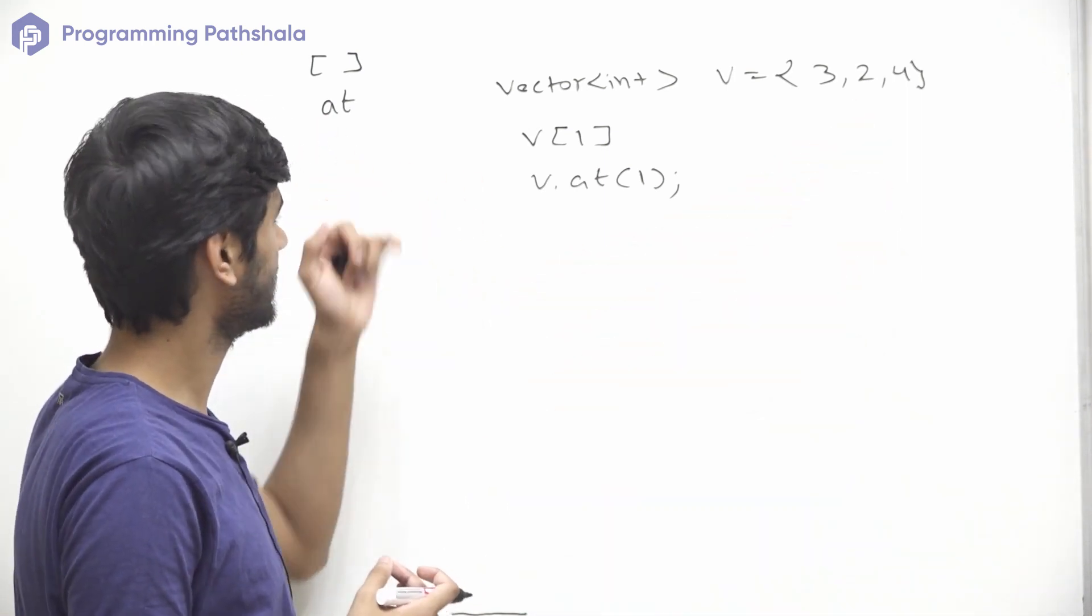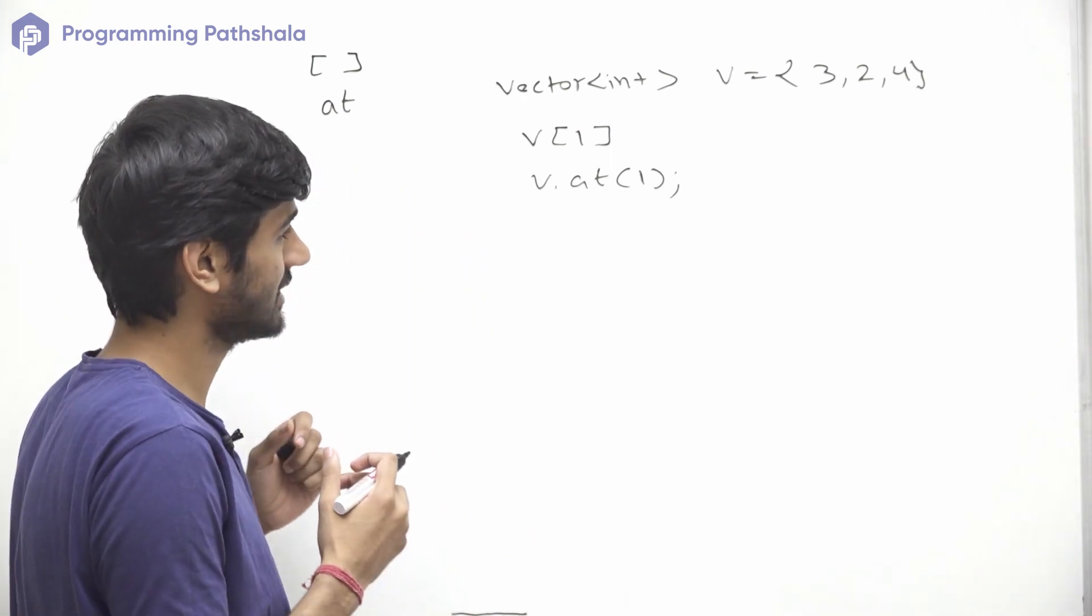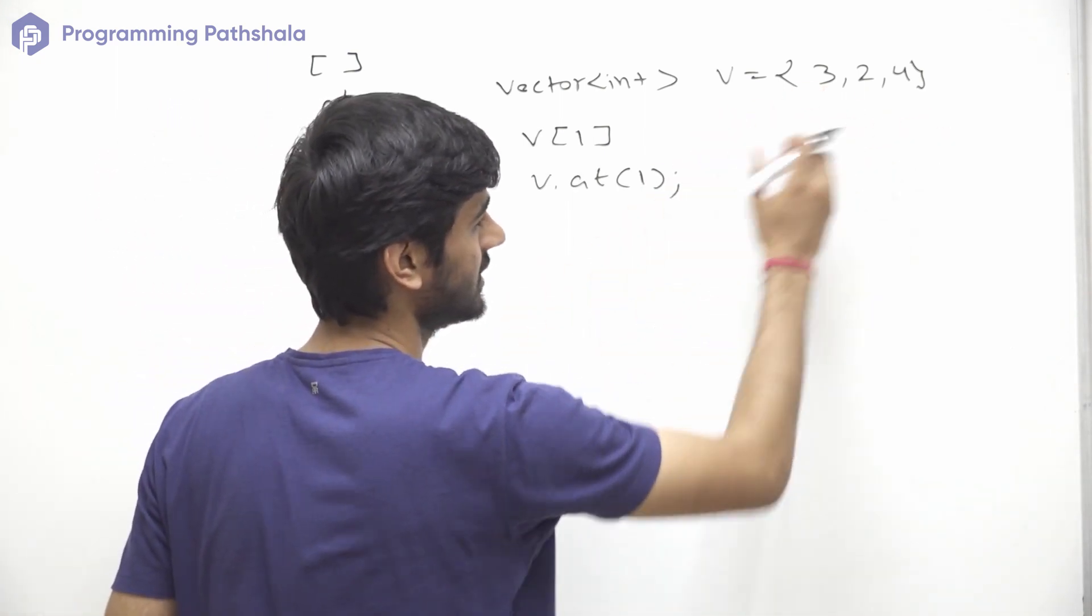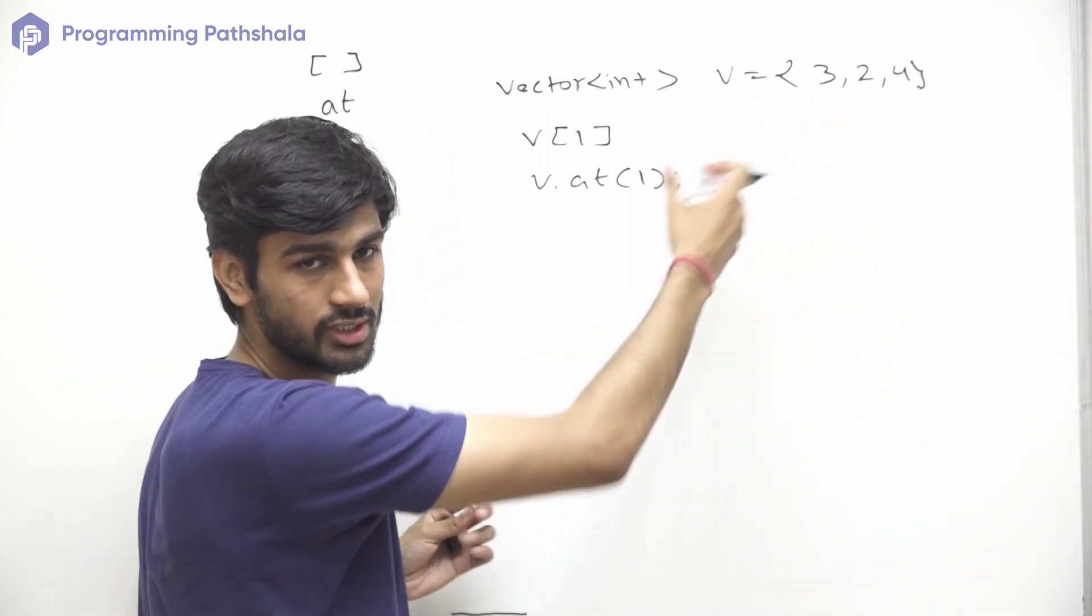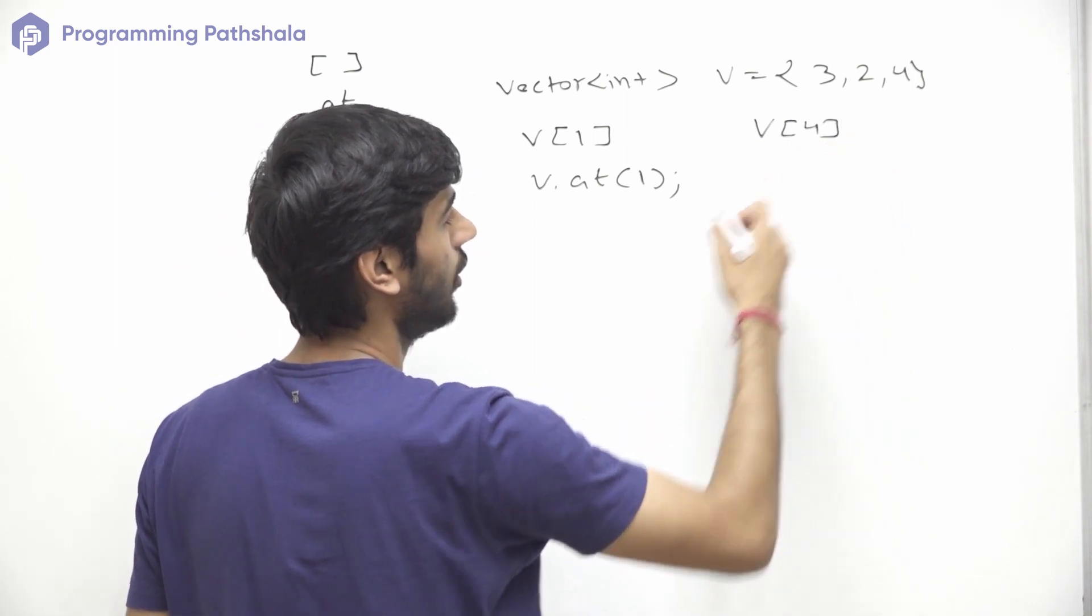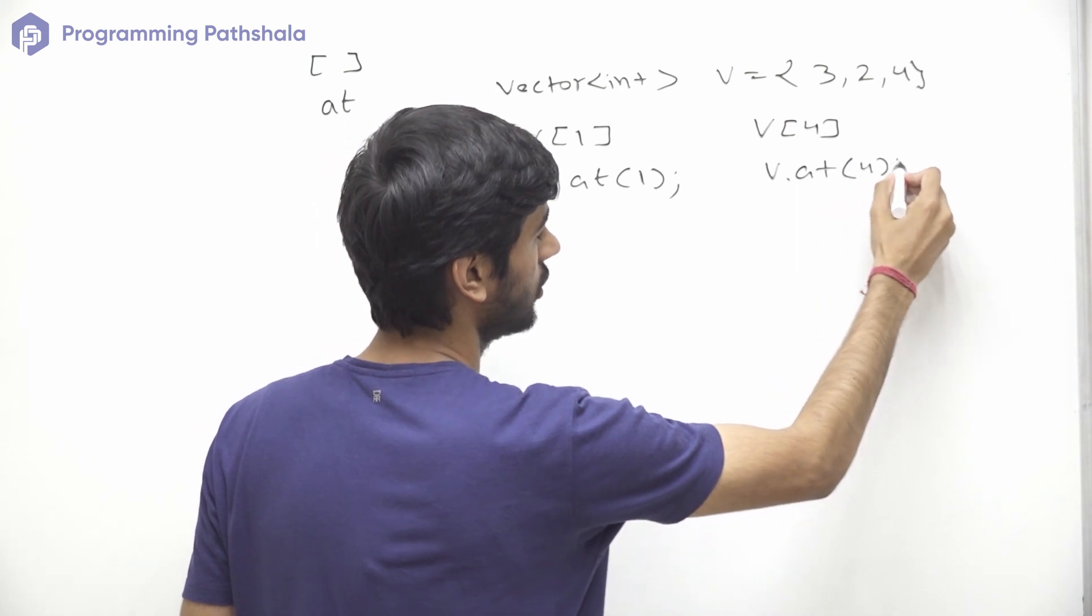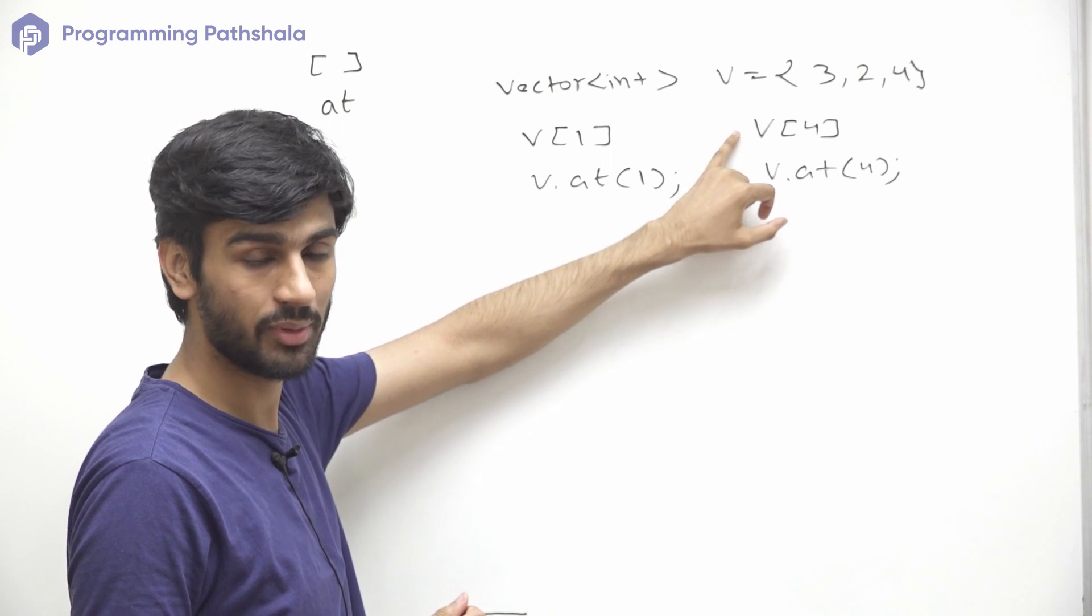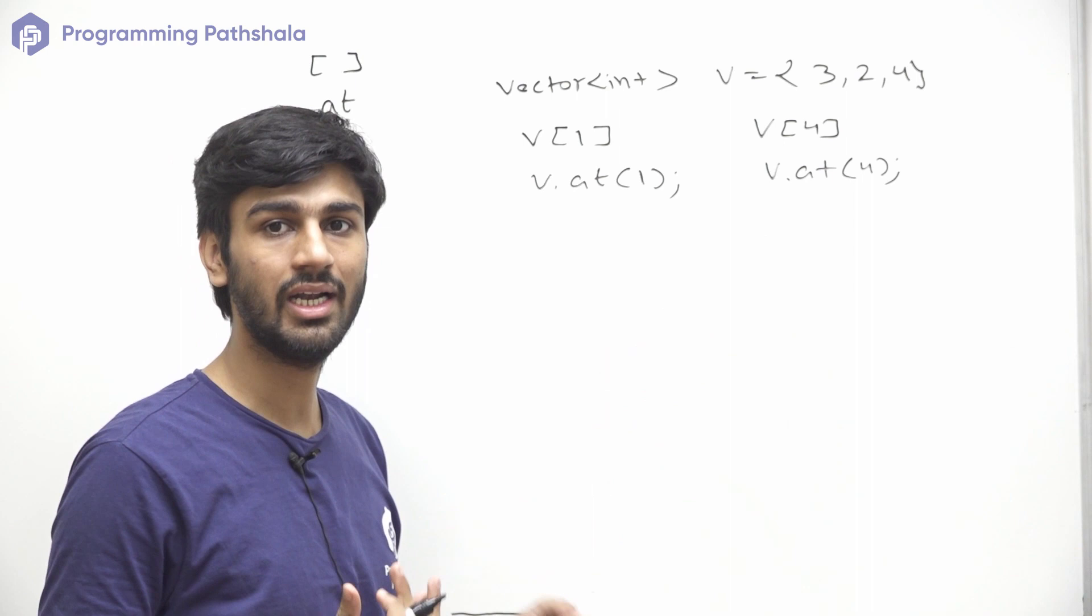Now using these two operators, we can update or fetch the value present at first index. So basically both the operators are same. The only difference is that if we try to access index which is outside the range of this vector, for example, the size of this vector is 3, so if we try to access index which is 4, which is not valid for this vector, in that case, v[4] will not give you a runtime error but v.at(4) will throw a runtime error. So the only difference between these two operators is that when an index is out of range, at operator gives us a runtime error.